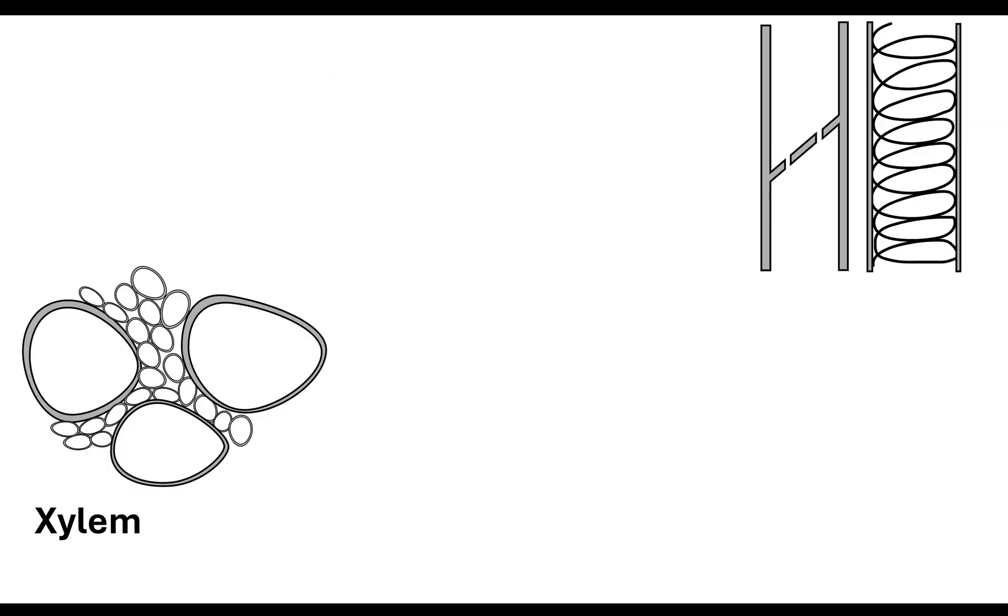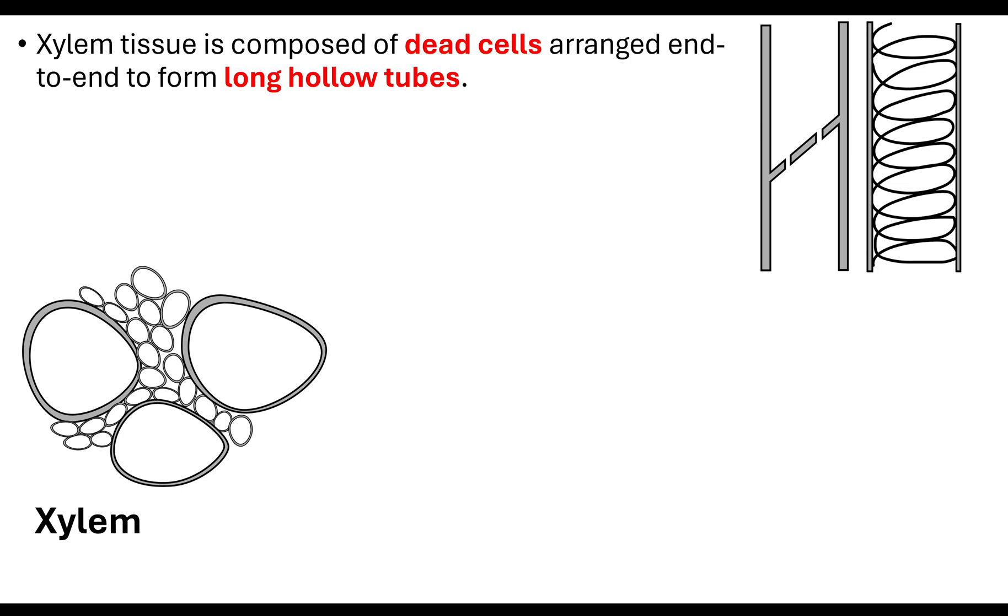So let's start off with the xylem. It's important to note that when I talk about the xylem I'm talking about a tissue, so we have cells that are grouped together. The xylem tissue is composed of dead cells. These cells do not contain a nucleus, they do not have the genetic material that allows them to perform metabolic processes like protein synthesis or respiration.